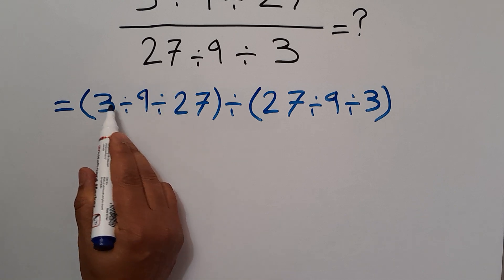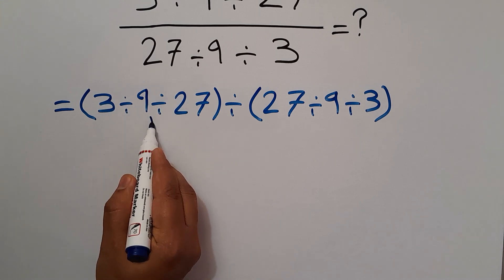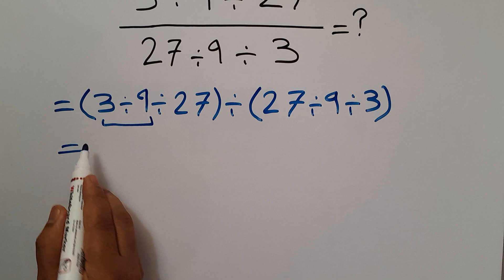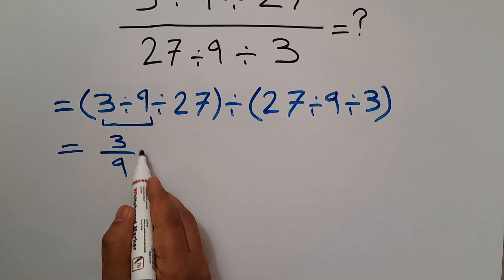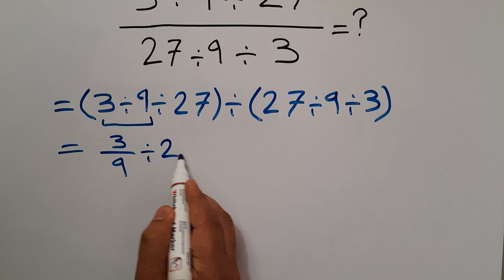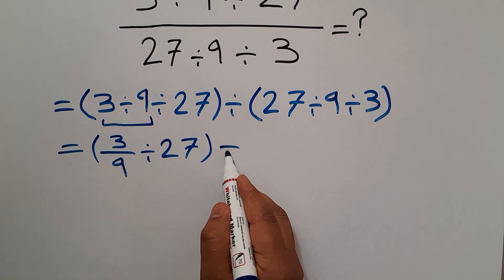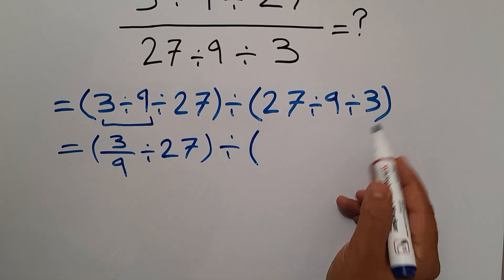So first, 3 divided by 9. We can write 3 over 9, and here we have divided by 27, divided by these parentheses.